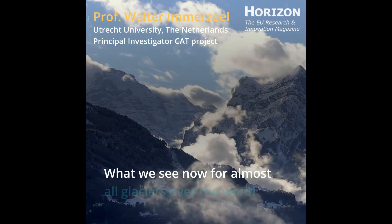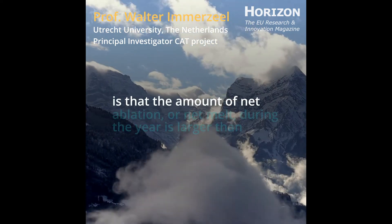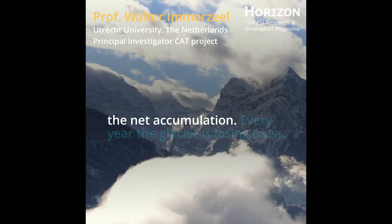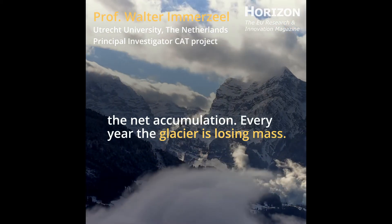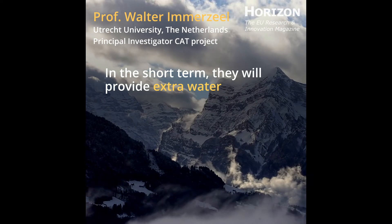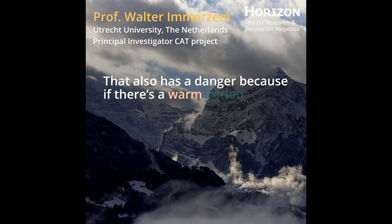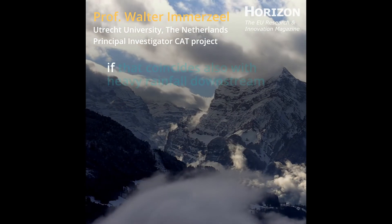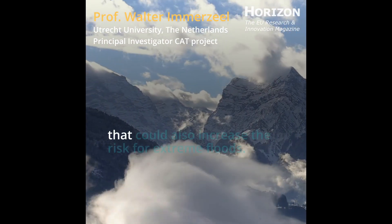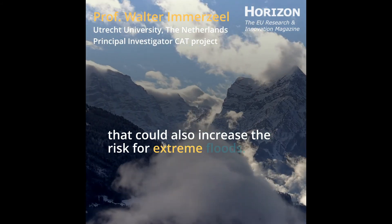What we see now for almost all glaciers over the world is that the amount of net ablation, or net melt during a year, is larger than the net accumulation. Every year the glacier is losing mass. In the short term they will provide extra water, but that also has a danger — if there is a warm period with a lot of glacier meltwater, and that coincides with heavy rainfall downstream, it could increase the risk for extreme floods.